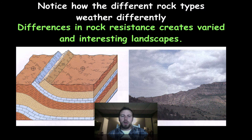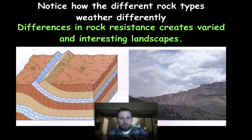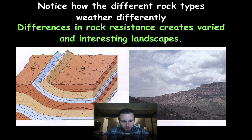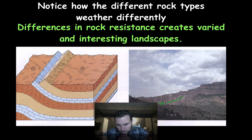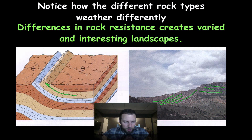We can also see how rock types weather differently because rocks are made up of different minerals and therefore have different resistances to weathering. If we look at this right-hand diagram, you can actually see layers that are tilted up. There's a difference in weathering — you can see how some layers are weathered differently than others.